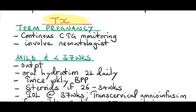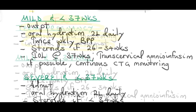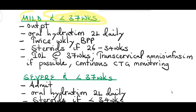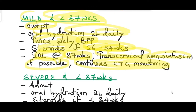For management, if the pregnancy is at term, perform continuous CTG monitoring due to the risk of fetal distress, and involve the neonatologist at delivery because of complications like pulmonary hypoplasia. For mild oligohydramnios less than 37 weeks, manage as an outpatient: encourage 2 liters of fluid daily, measure the biophysical profile at least twice a week, and give steroids if gestational age is 26 to 34 weeks to mature the lungs. Perform induction of labor at 37 weeks if there is no contraindication, and attempt transcervical amnioinfusion if possible; otherwise, continuous CTG monitoring is recommended.